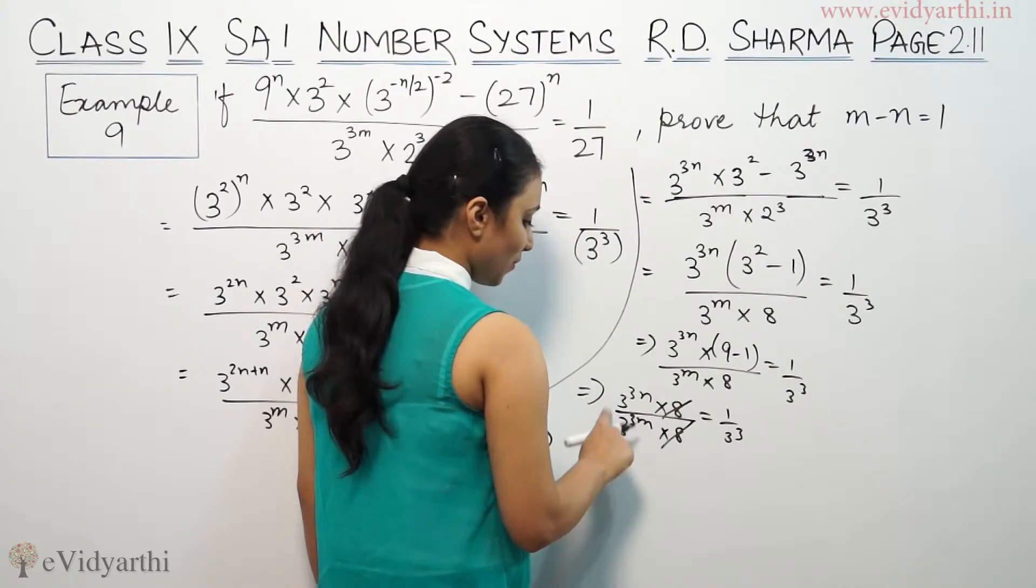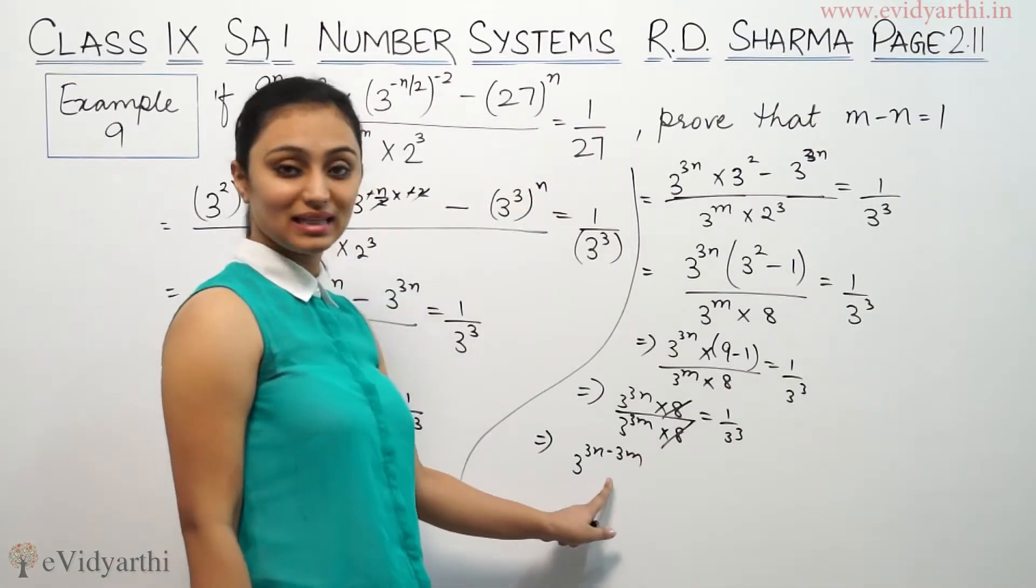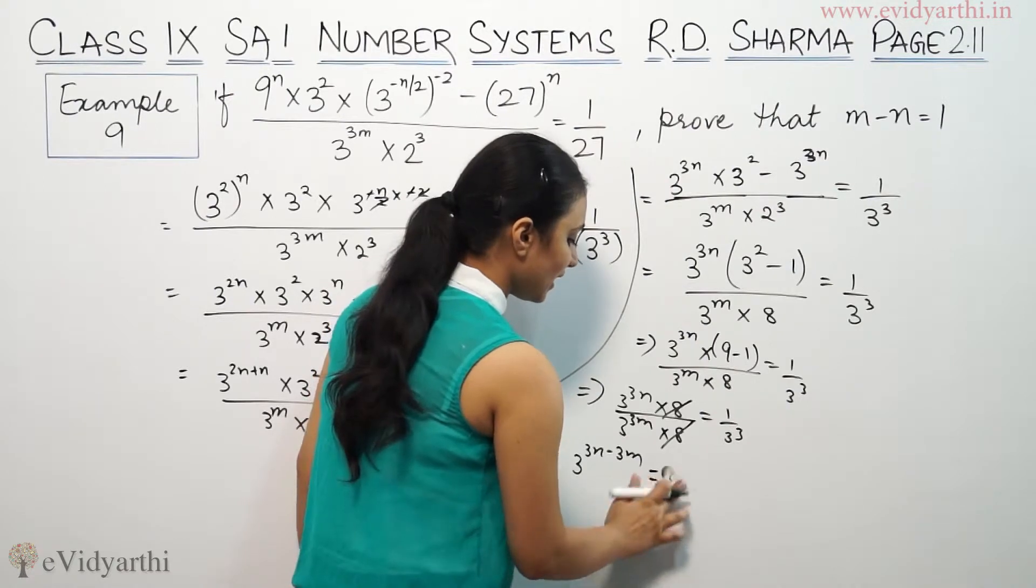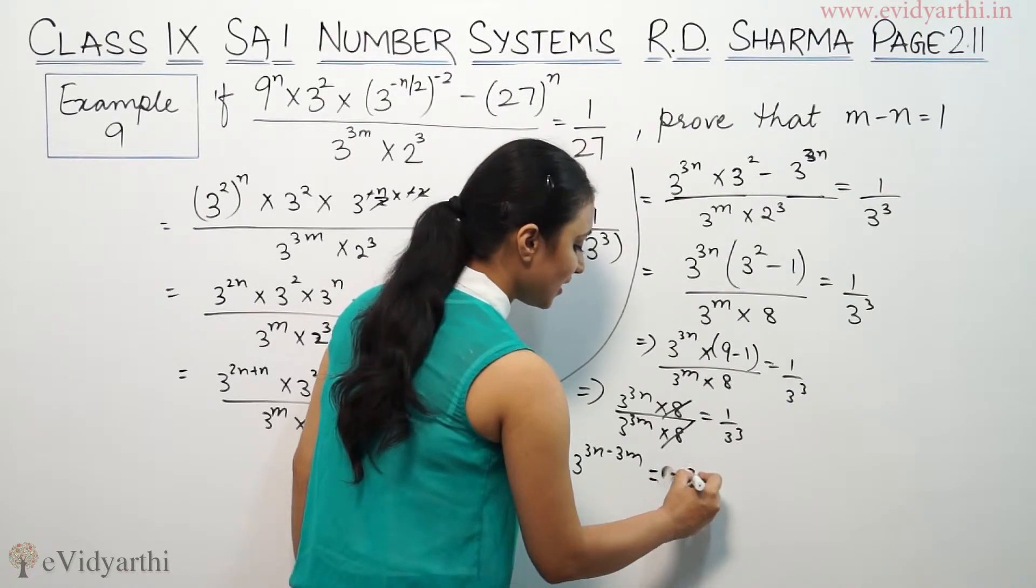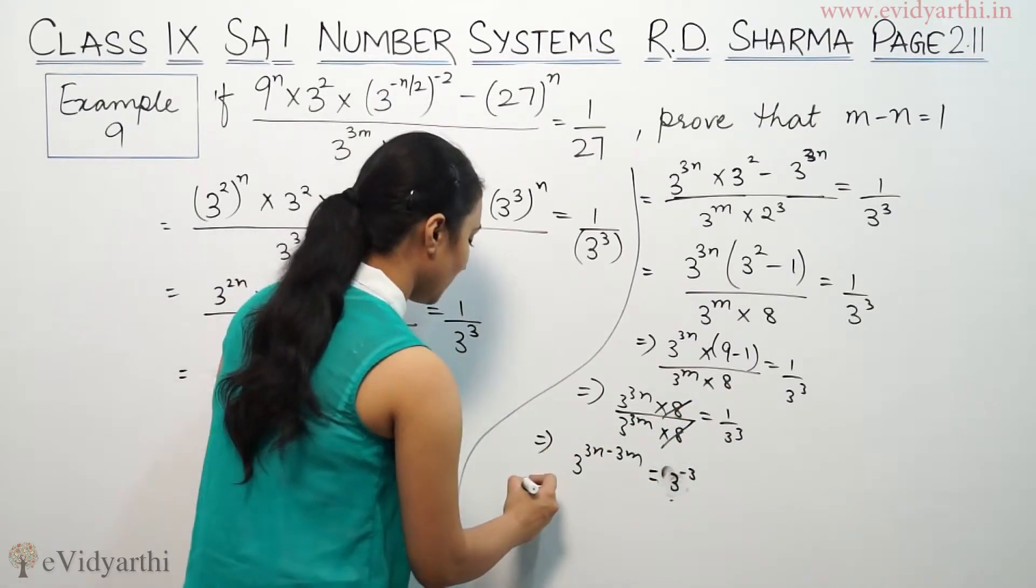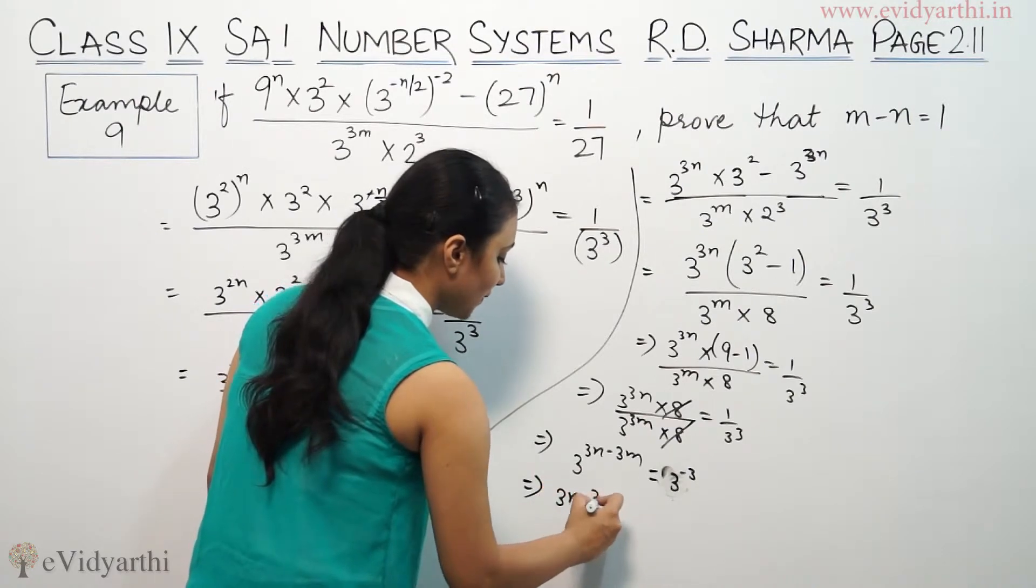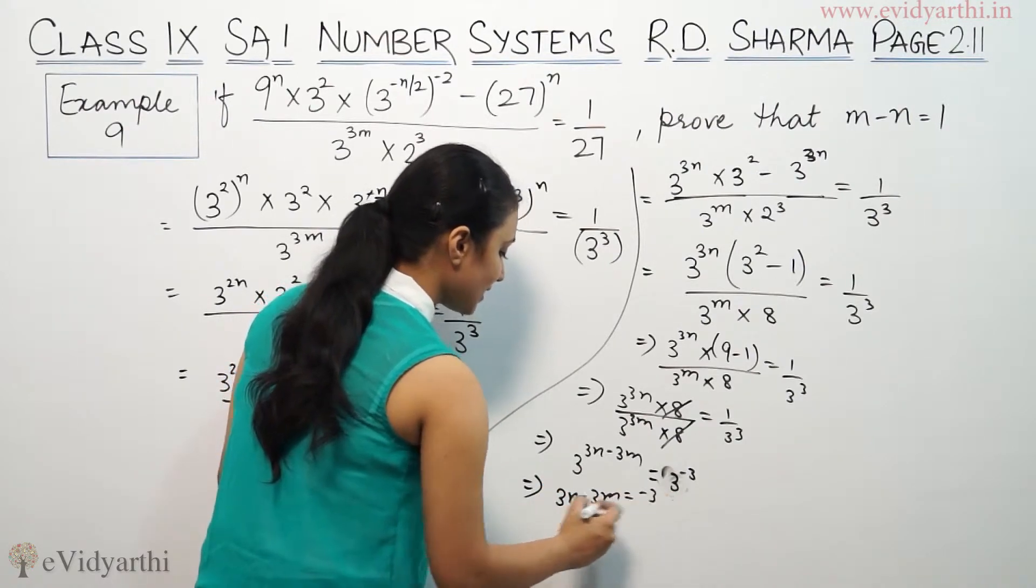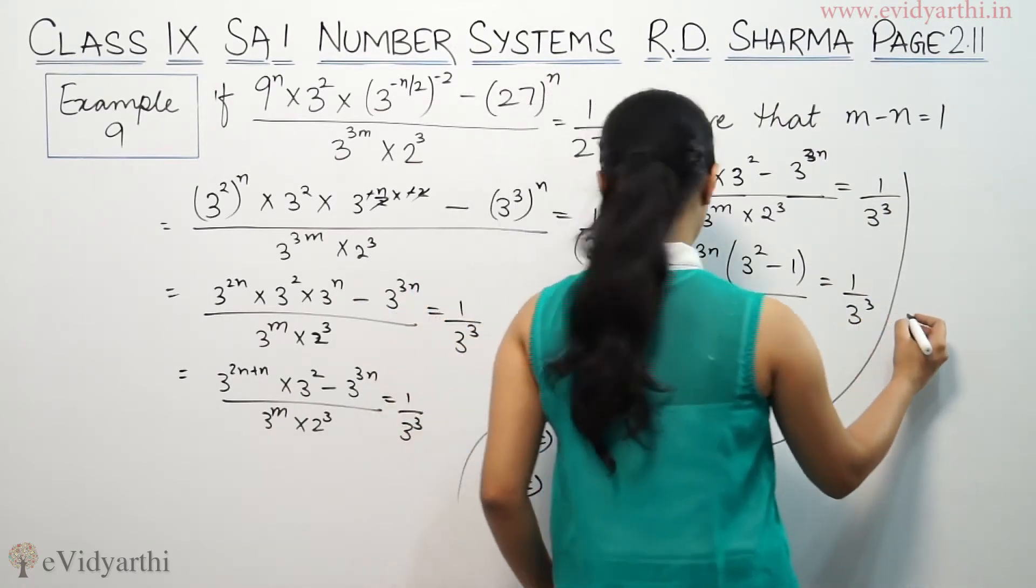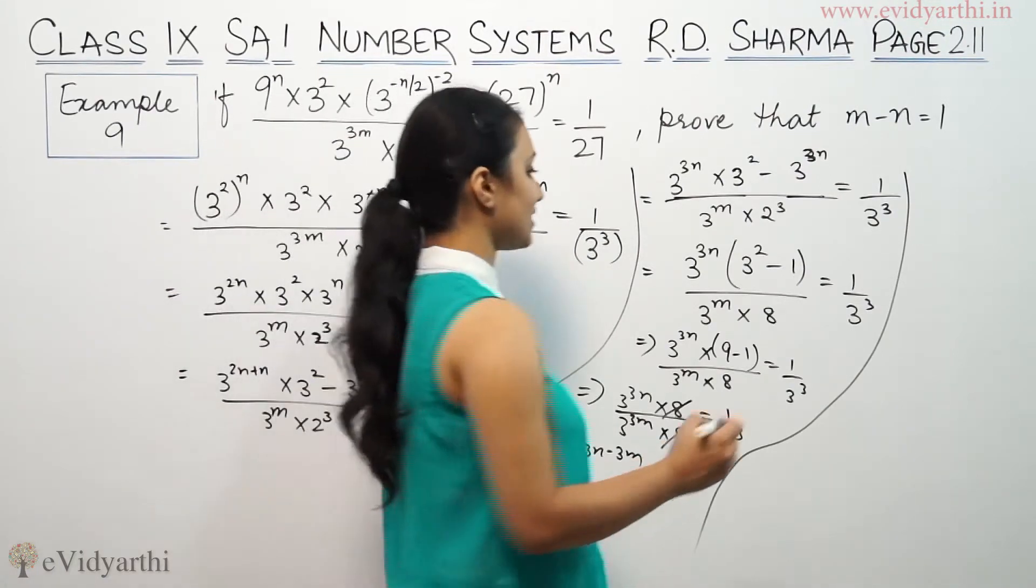So the bases are the same and dividing, so we can equate the powers. That means 3 raised to the power 3n minus 3m equals 3^(-3). When we bring this up, the power becomes negative. So the powers can be equated, giving 3n minus 3m equals minus 3.